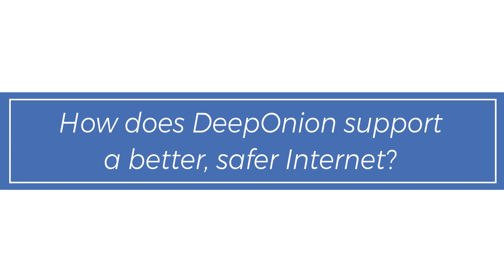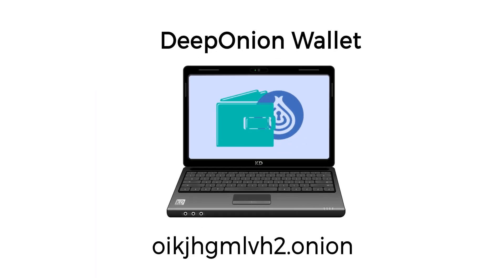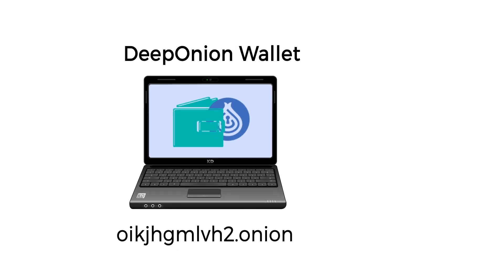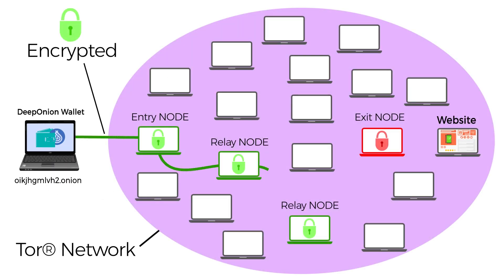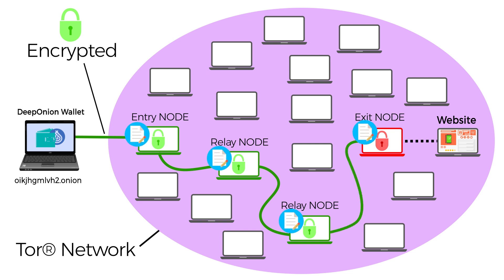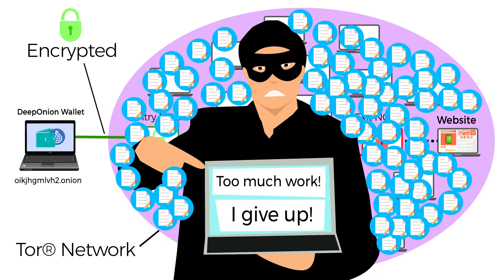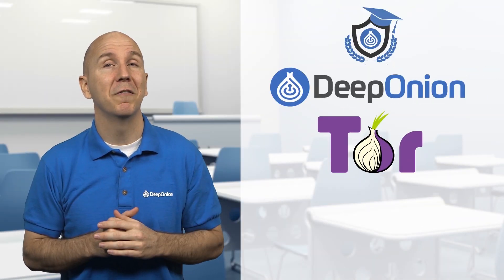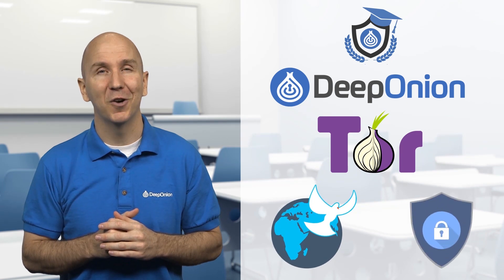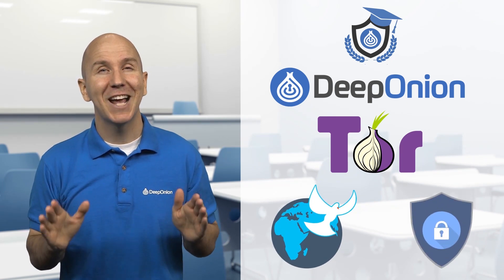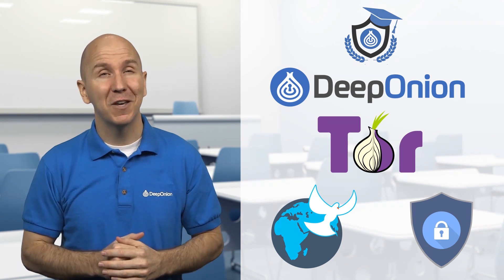How does DeepOnion support a better, safer internet? Every DeepOnion wallet, as soon as it starts, connects to Tor nodes. And every Tor node connected creates a relay connection log. Many of these logs are created — millions of them. So people with bad intentions have to work much harder to find someone to abuse. By using DeepOnion with Tor, you provide freedom and security for other people. They now have the chance to use the internet without the fear of abuse.